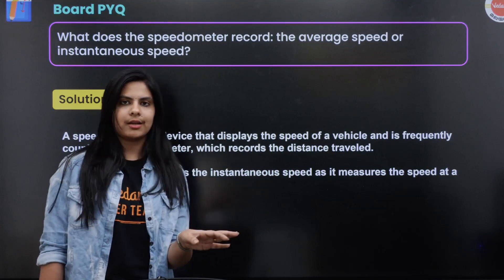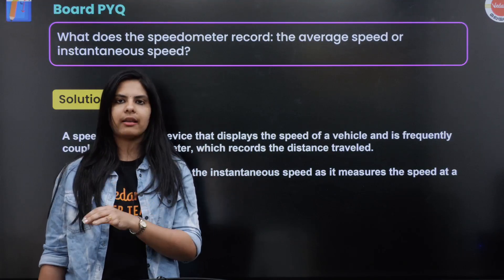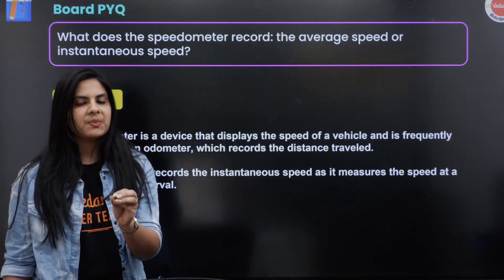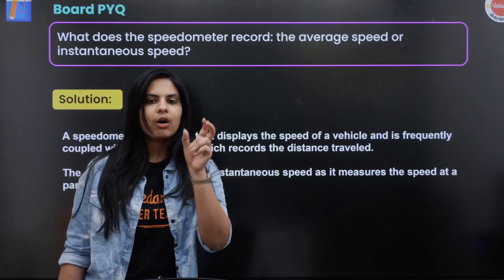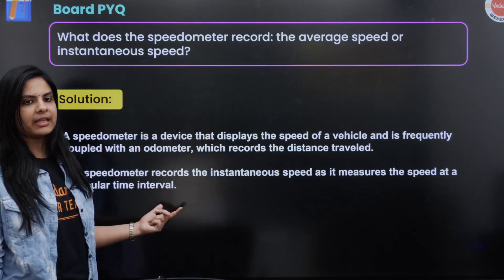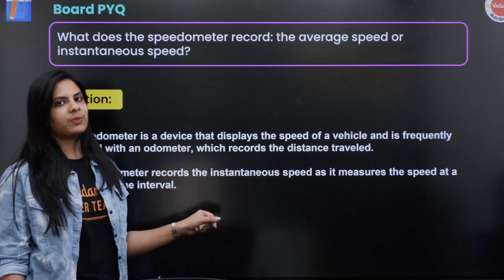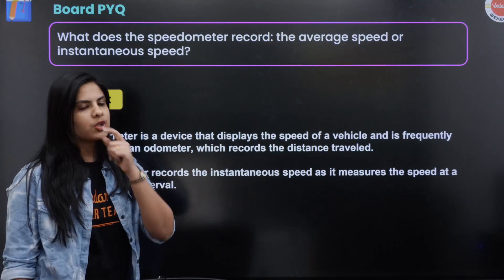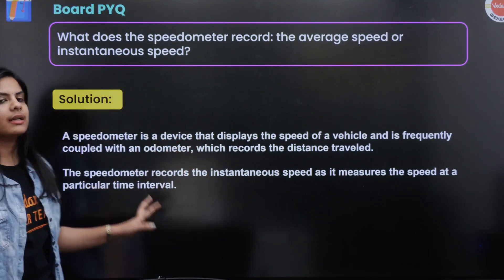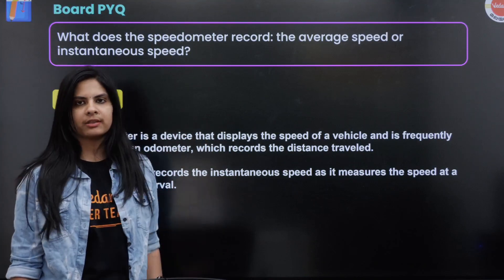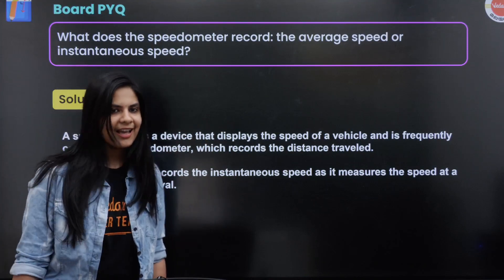A speedometer is a device that displays the speed of a vehicle and is frequently coupled with an odometer which records the distance traveled. The speedometer records the instantaneous speed as it measures the speed at a particular time interval. Clear? Let's see the next question.